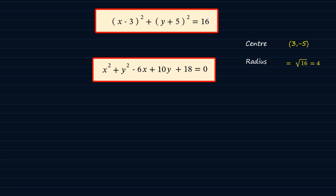We said g is half of the coefficient of x. Therefore, g comes out as half of minus 6, which is minus 3. And f is half of the coefficient of y. The coefficient of y in this case is 10, so half of 10 is 5. And lastly, the constant is 18. So we now have our g, our f, and our c.